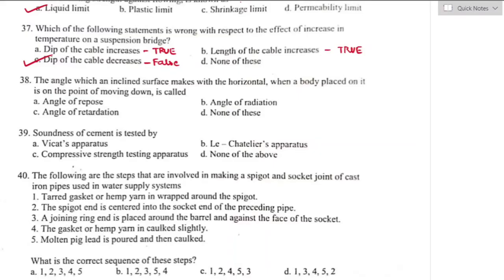Question number thirty-eight: the angle which an inclined surface makes with the horizontal when a body placed on it is on the point of moving down is called the angle of repose. Option A is the right answer. It is the minimum angle that an inclined plane makes with the horizontal when a body placed on it just begins to slide down.